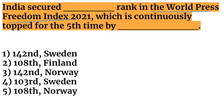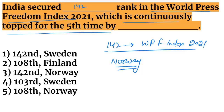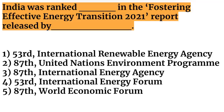Next question: India was ranked how in the World Press Freedom Index 2021, and which country topped it? India's rank is 142 in the World Press Freedom Index 2021. Norway topped this index for the fifth consecutive time.